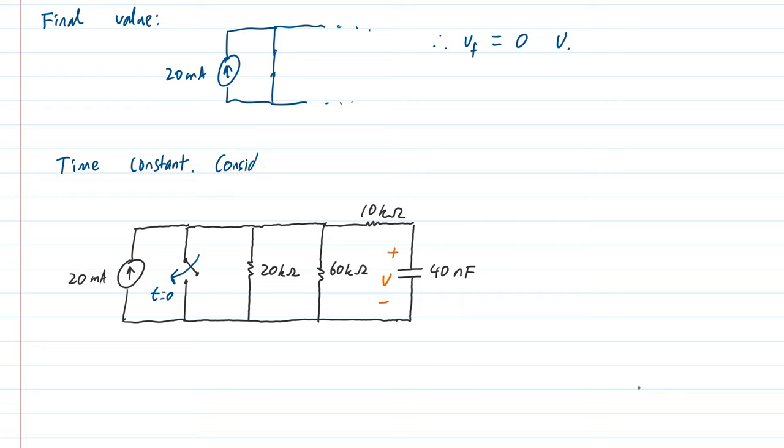I consider the Thevenin resistance as seen by the capacitor. If I remove the capacitor from my circuit and just put a couple of terminals there, I want to know, looking into these terminals, what is the Thevenin resistance? I also need to put the switch in its after it moves position. So this switch will close. So the circuit looks like that.